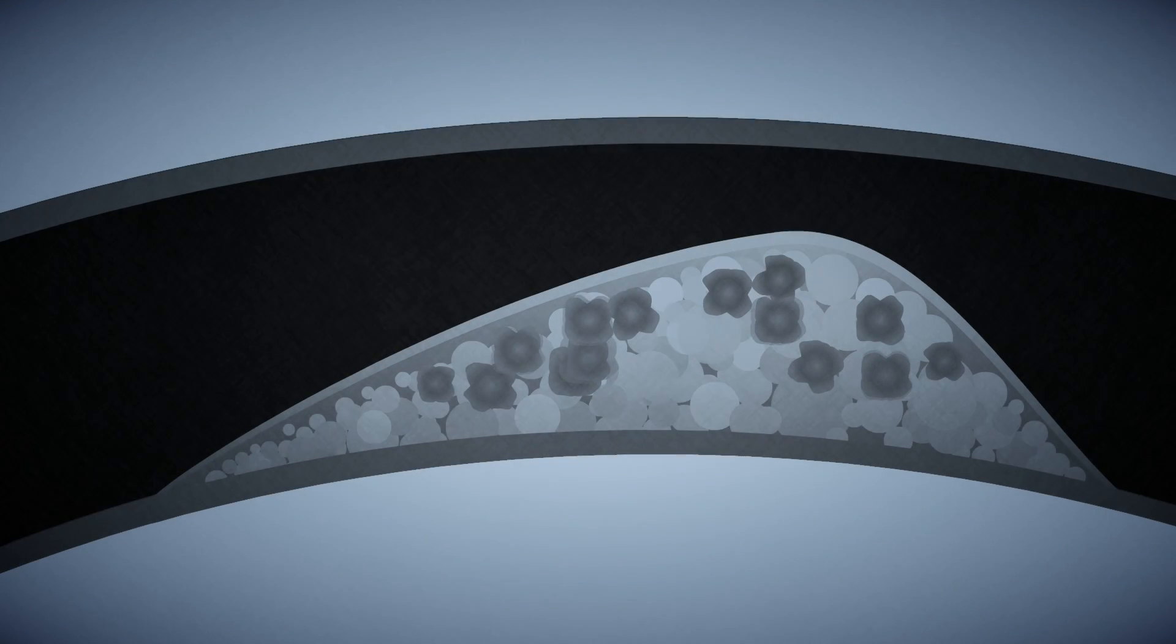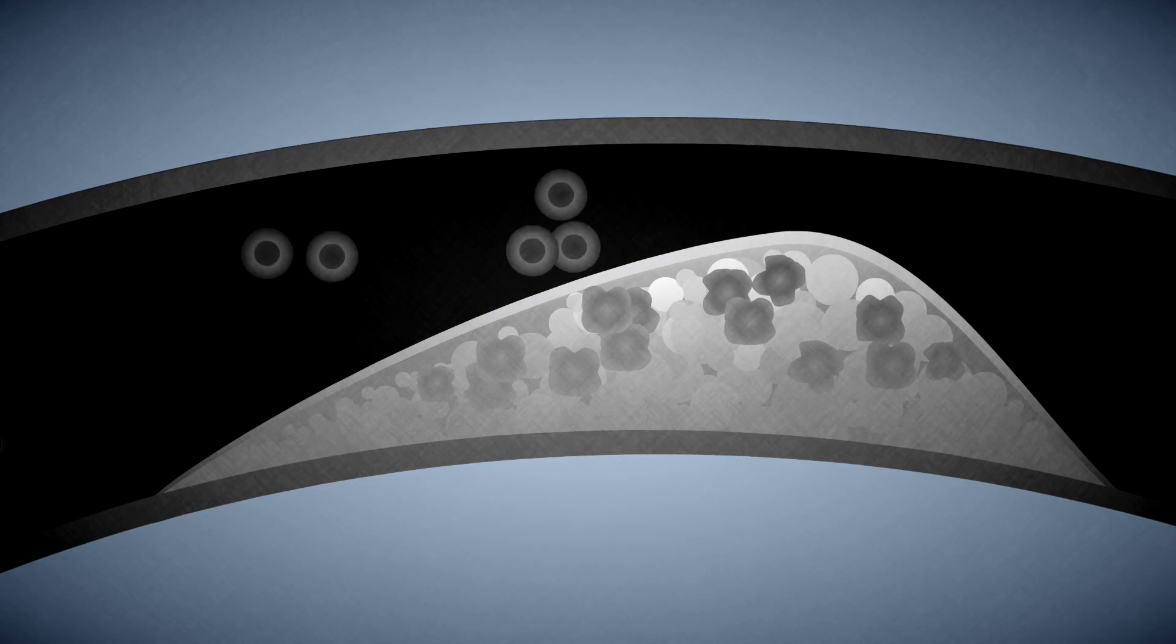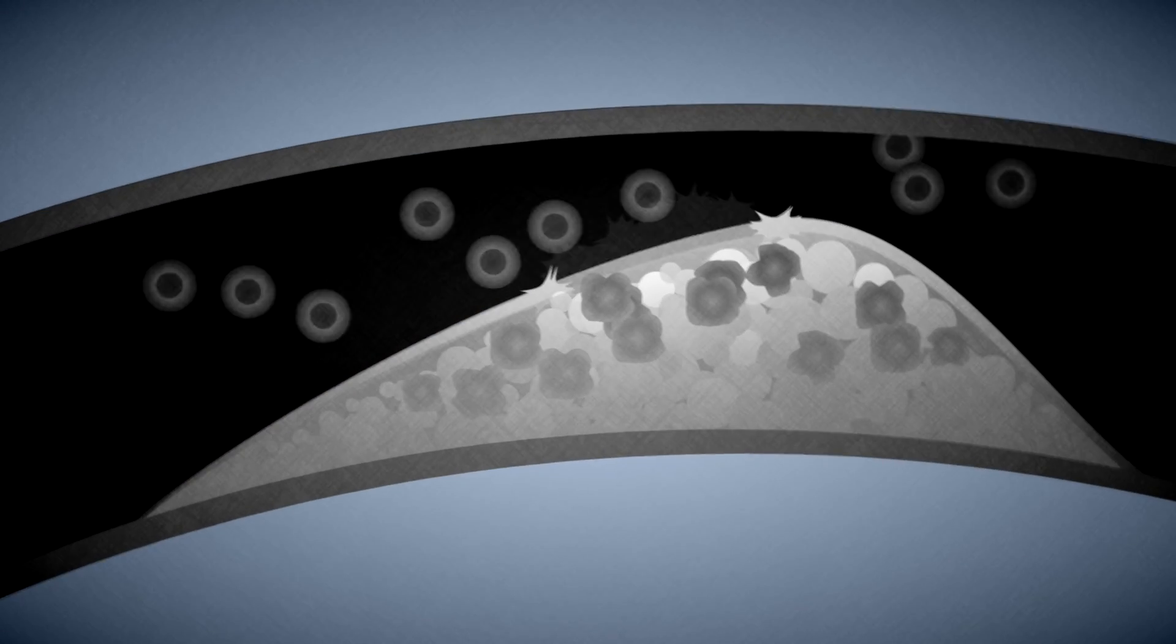A dangerous plaque tends to contain a lot of lipids, macrophages, and hemorrhage, which means inflammation and bleeding.